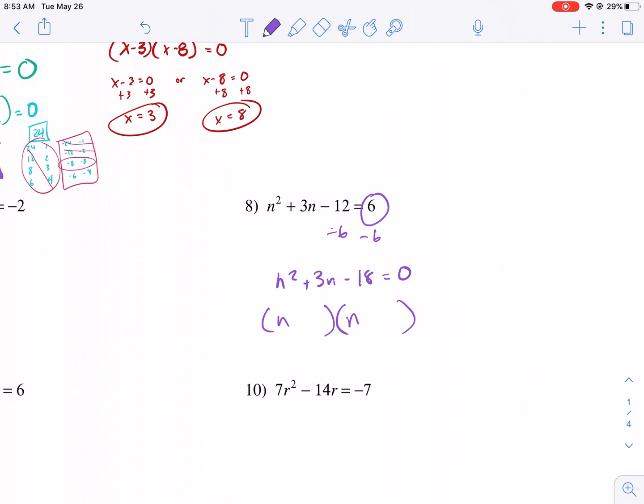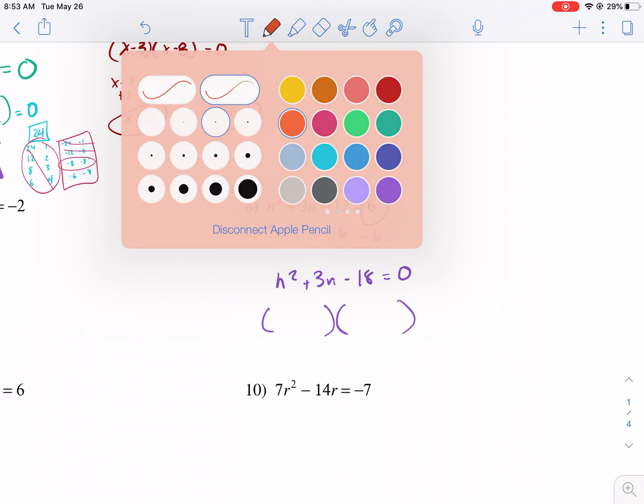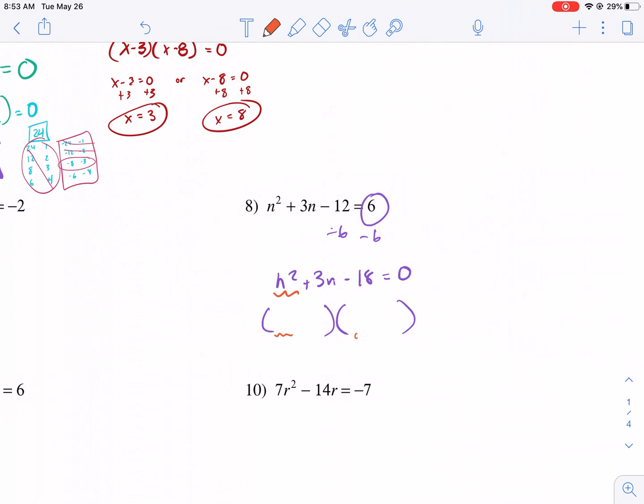We have n, n, because those are our factors. Our factors of n squared. So we have n and n. And we're going to put factors of negative 18. Those go here. So we're going to have negative 18. This is where I need a little bit of help. I'm going to consider negative 6. So keep in mind that because this is negative, the signs are going to be opposite with the factors. So it could be like this, or it could be like this. The other thing you want to consider, this one. This middle term is positive.